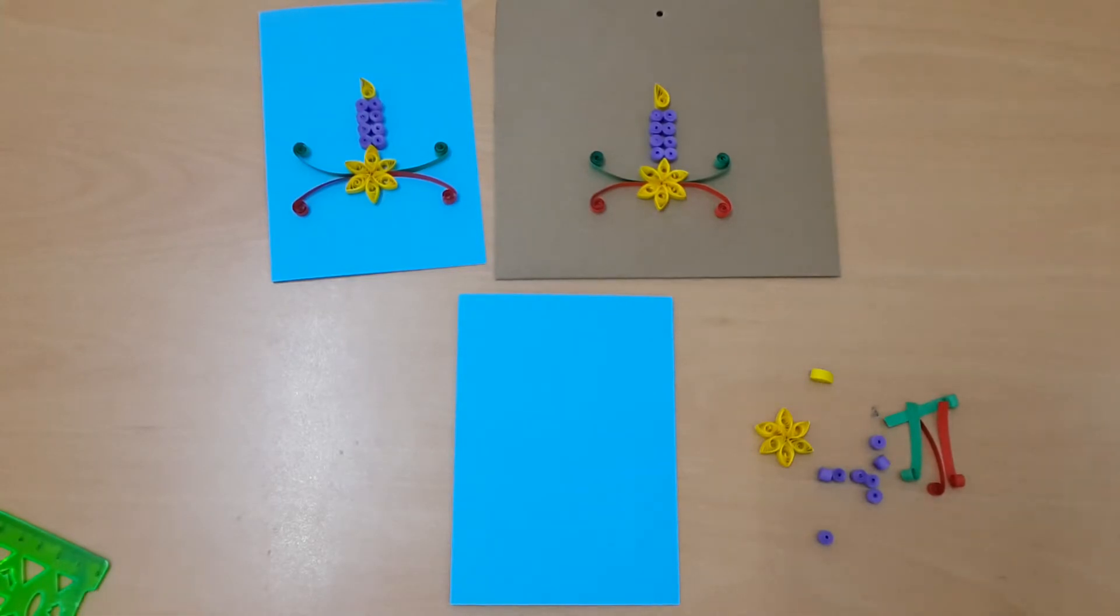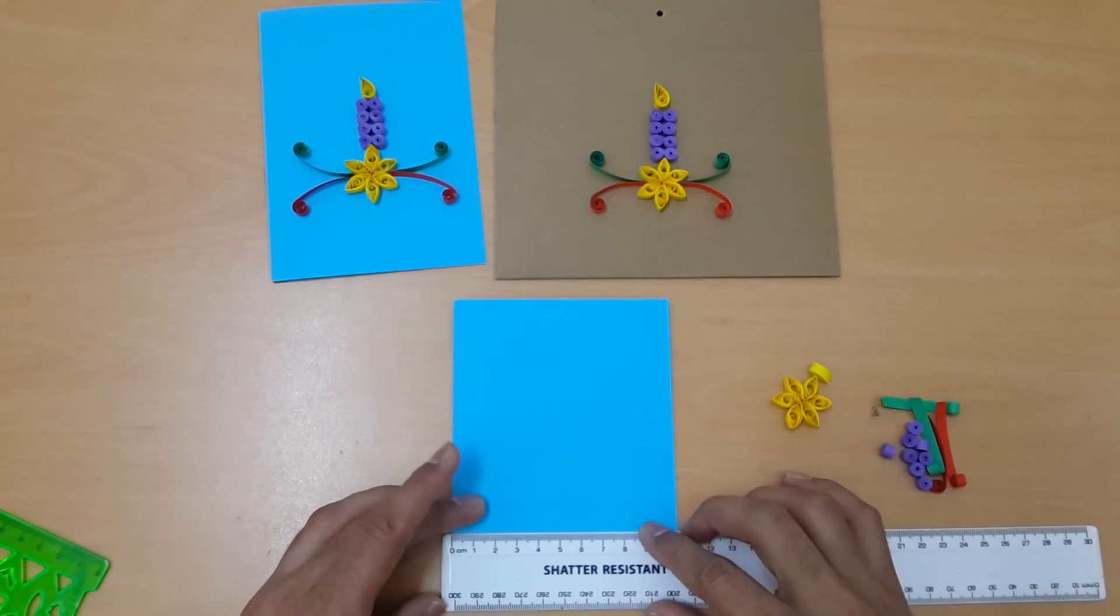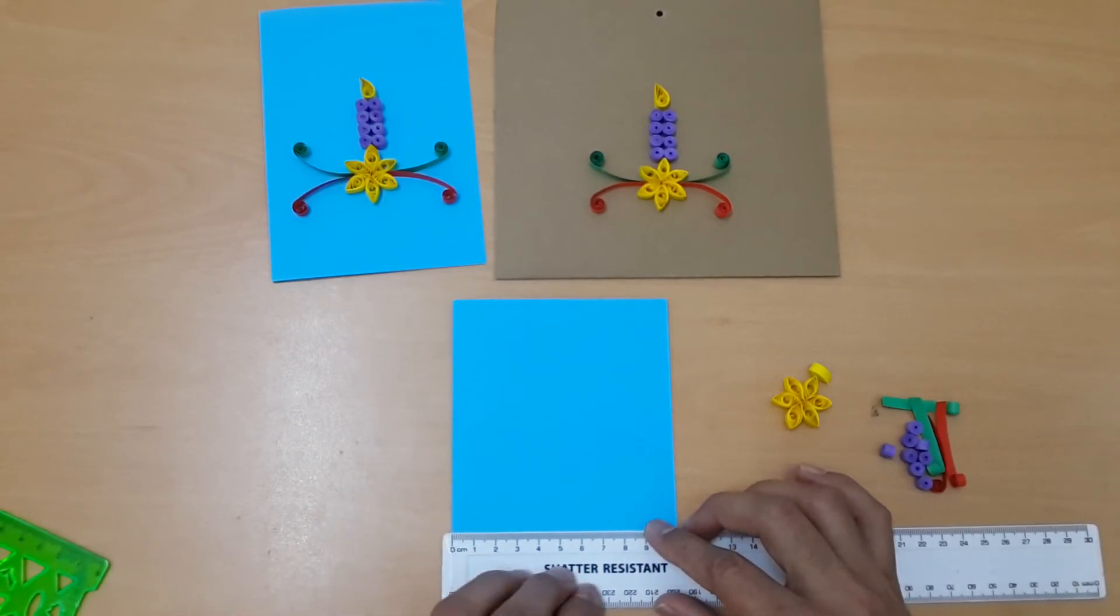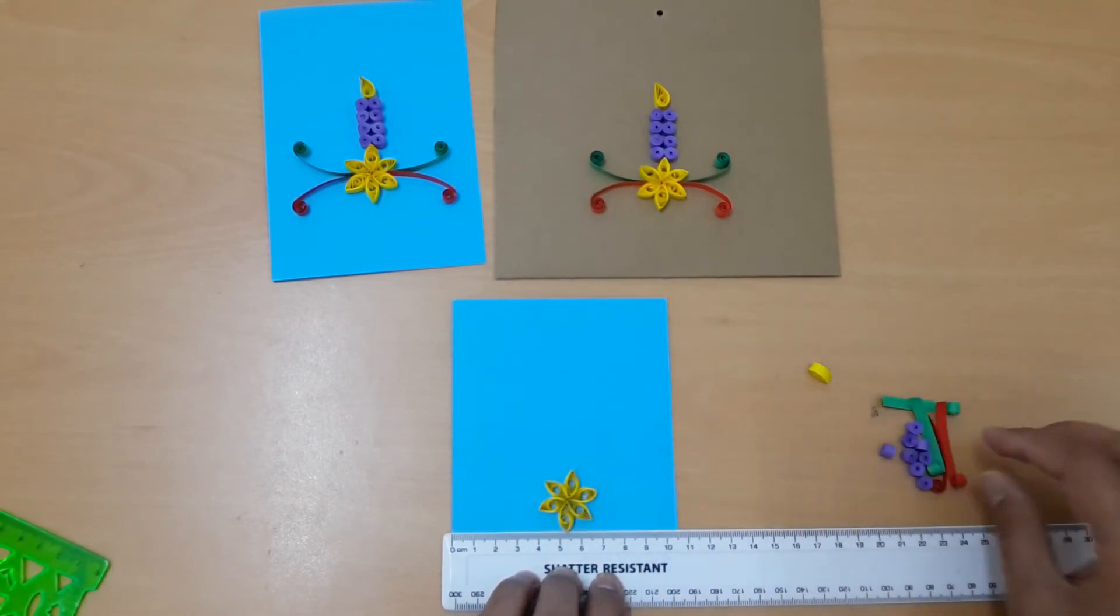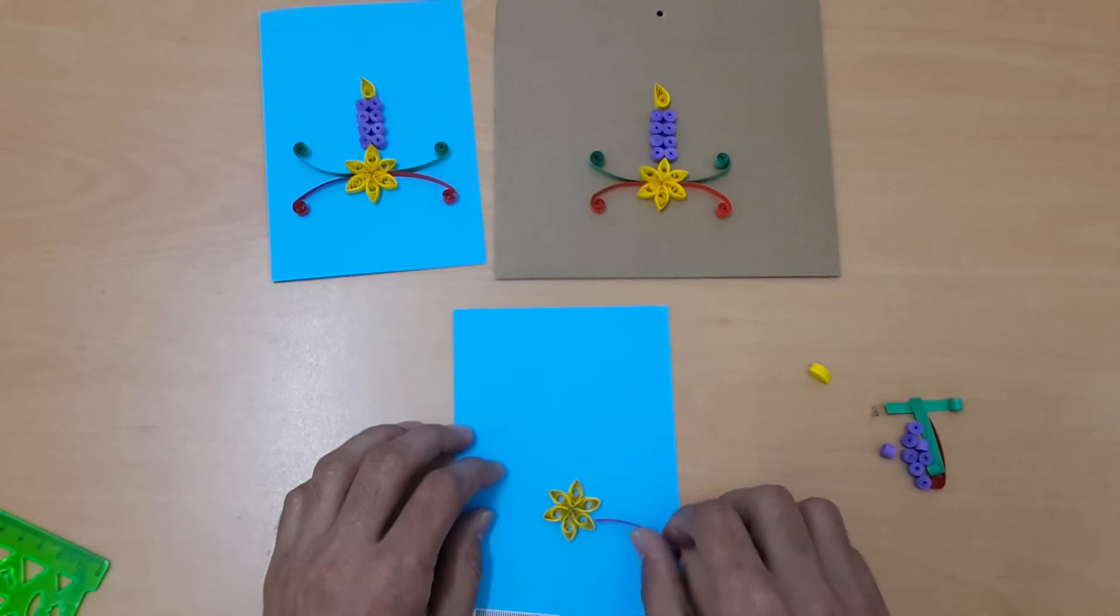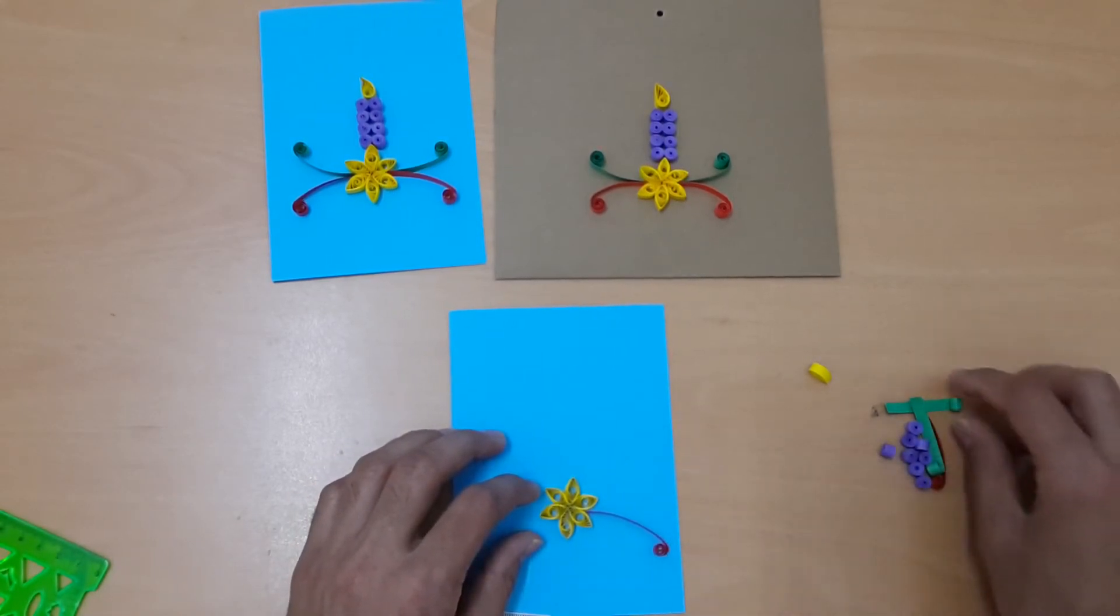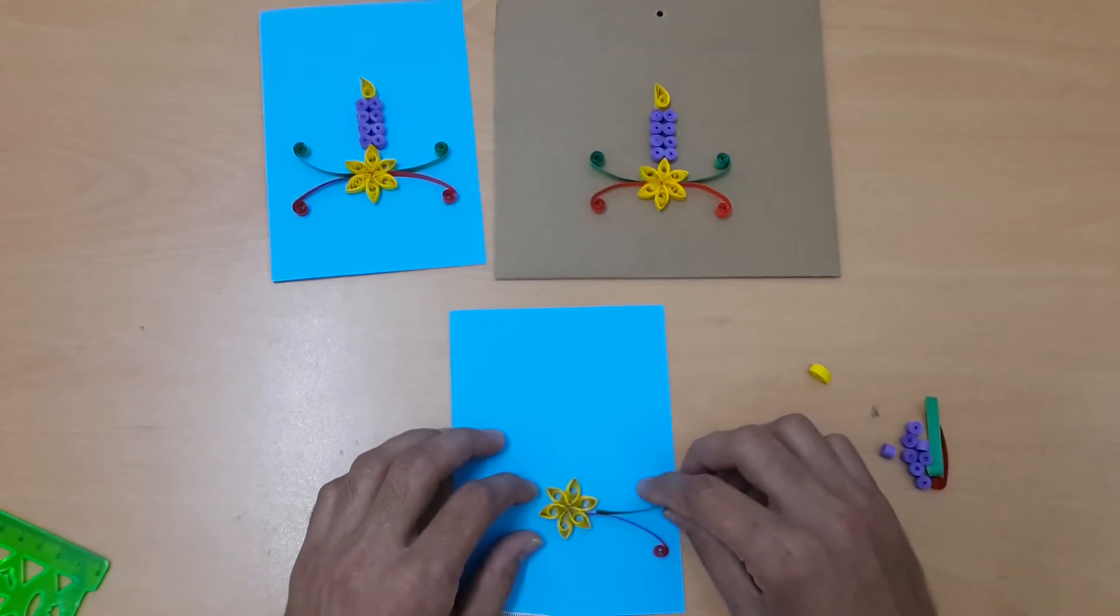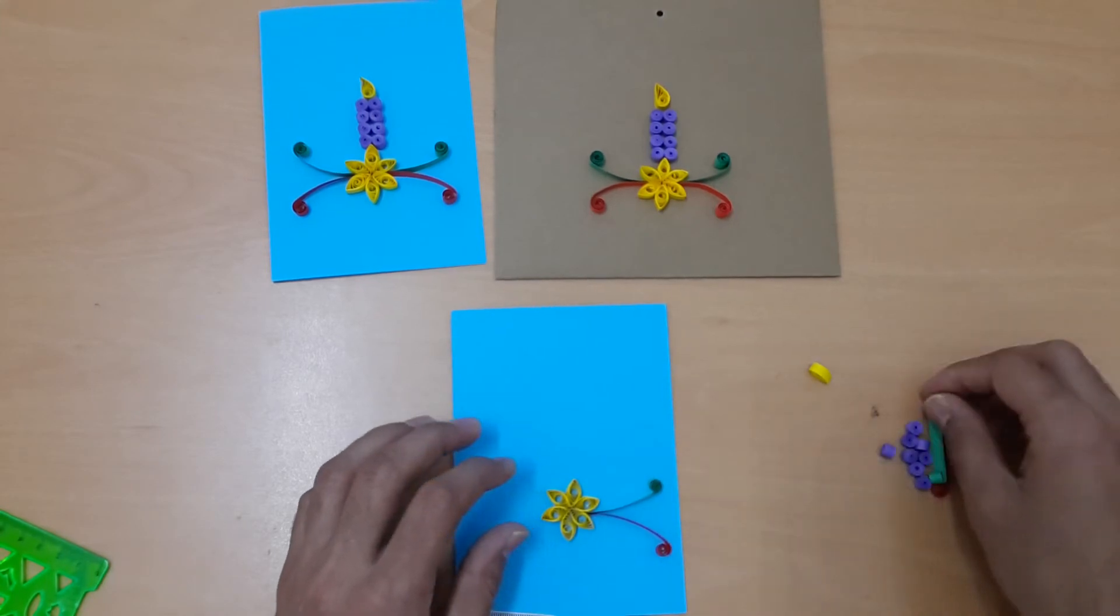So friends we got our stuff. Let's get started putting the stuff on the paper. First of all you have to get the measurement with the ruler. Take the middle, put the flower in the middle, then put the branches outside.